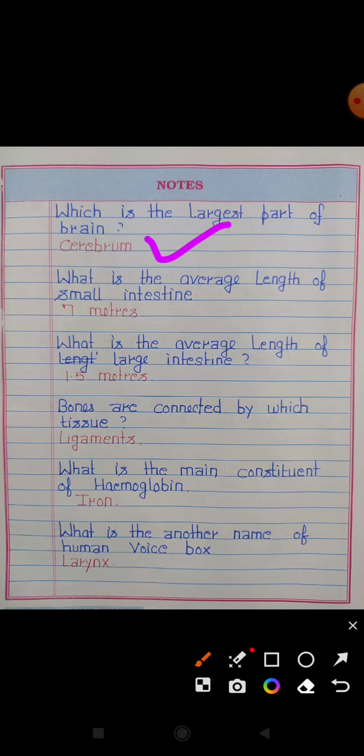What is the average length of the large intestine? Answer: 1.5 meters. Bones are connected by which tissue? Answer: Ligaments.